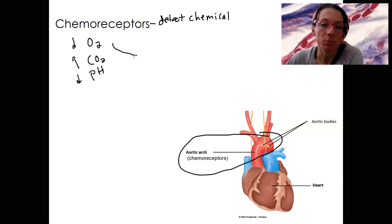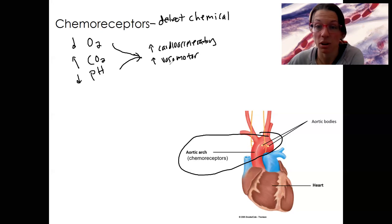This is going to be detected by chemoreceptors and travel to the medulla. Specifically, this scenario would increase our cardioacceleratory region, increased vasomotor, this is a sympathetic response here, and decrease the cardioinhibitory, which is associated with parasympathetic.